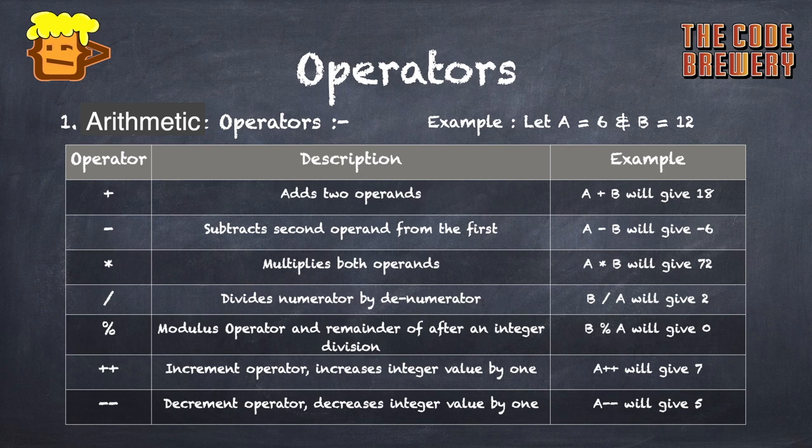The asterisk or multiply operator multiplies both operands, so A times B will give 72. The slash or divide operator divides the numerator by the denominator, so B divided by A will give us 2. The modulo operator gives the remainder of integer division, so B modulo A will give us 0.